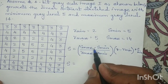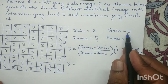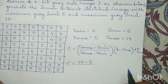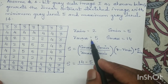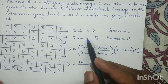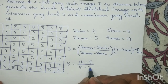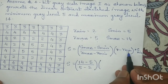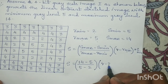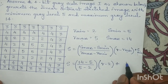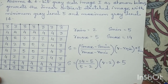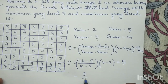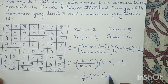Substituting values: s_max minus s_min equals 14 minus 5, divided by r_max minus r_min which is 5 minus 2, multiplied by r minus r_min which is r minus 2, plus s_min which is 5. So this becomes 9 divided by 3, multiplied by (r minus 2), plus 5.